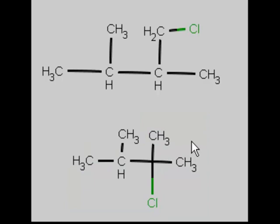This bottom isomer is formed preferentially because the chlorine is bonded to a carbon that has many carbons bonded to it, as opposed to these methyl groups out here. These methyl groups only have one carbon bonded to each of them.